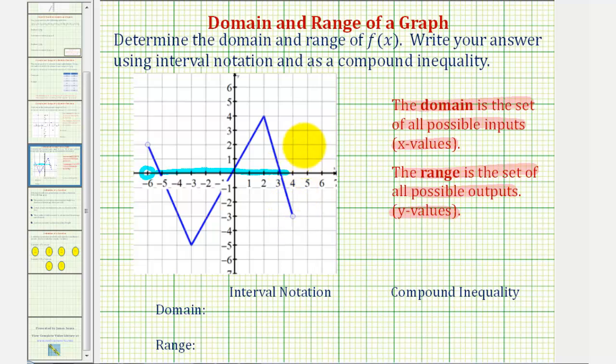But again, because of this open point here, it does not include positive four. So the domain of the function is the open interval from negative six to positive four. So using interval notation, we would have a rounded parenthesis, negative six comma four, rounded parenthesis.